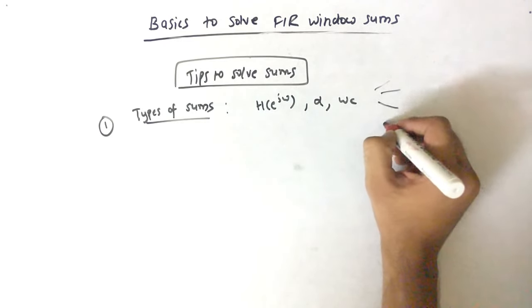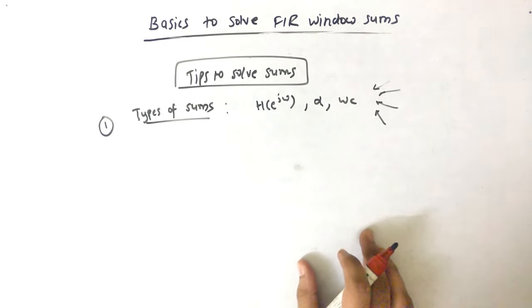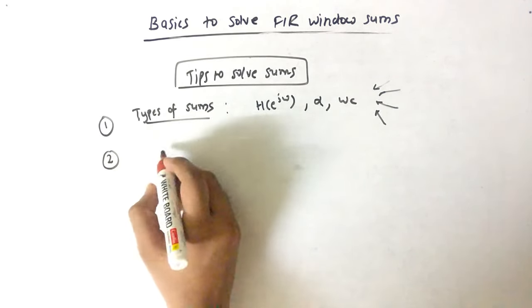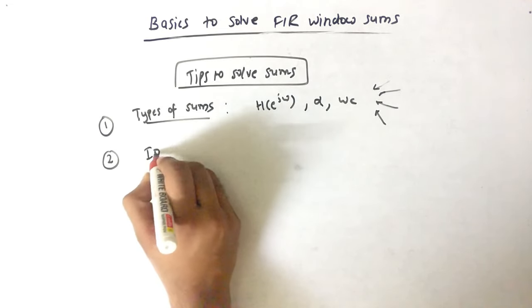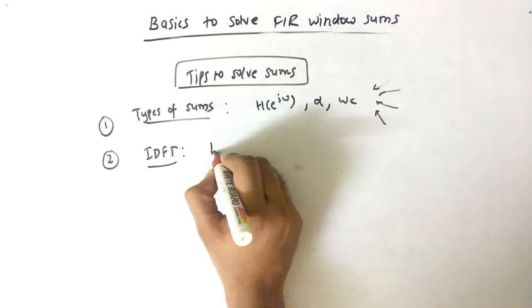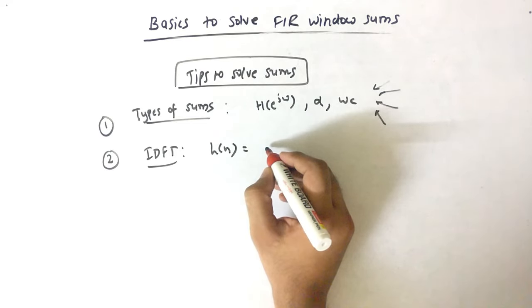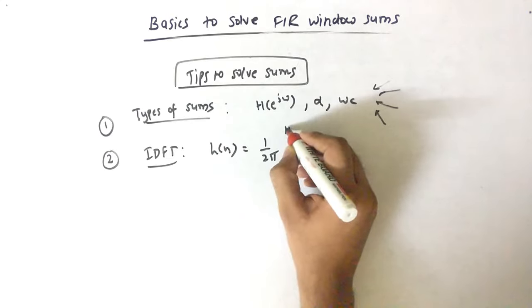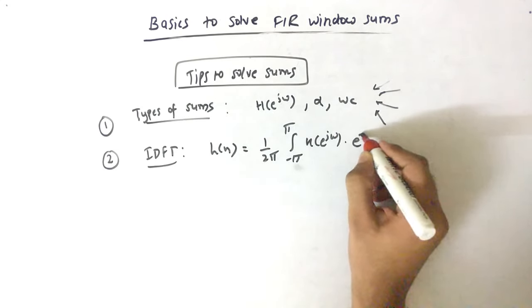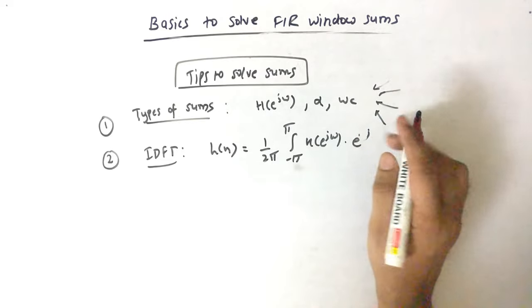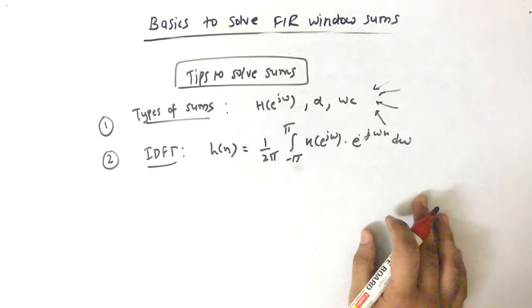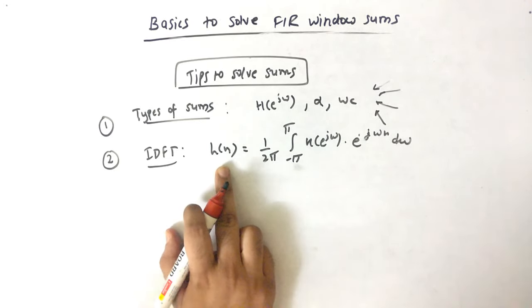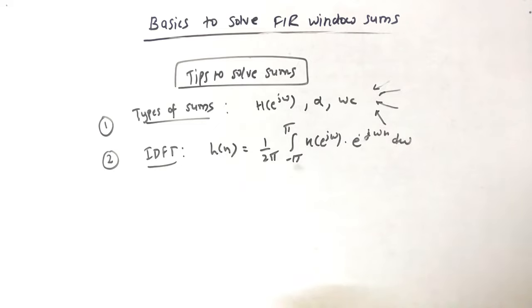There are 4 to 5 ways, so it is very important that you should know what are the types of sums. Second, you should know how to find IDFT, meaning how to find H of N where H of E raised to J Omega is given. The formula is 1 by 2 pi integral minus pi to pi, H of E raised to J Omega into E raised to plus J Omega N, D Omega. Using this formula we can find H of N, and after getting IIR we can use window and we can get FIR.